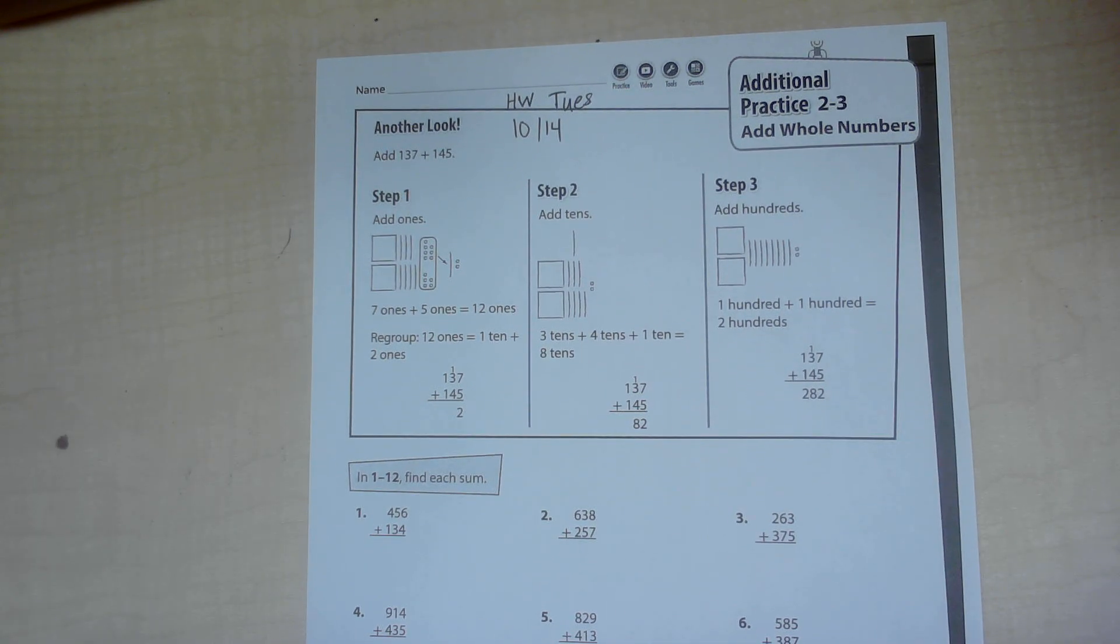We went over two strategies. The regrouping strategy, where you add the ones first. If you have 10 or more, then you have to regroup to the next place. If you have nine or less, then you don't have to regroup.